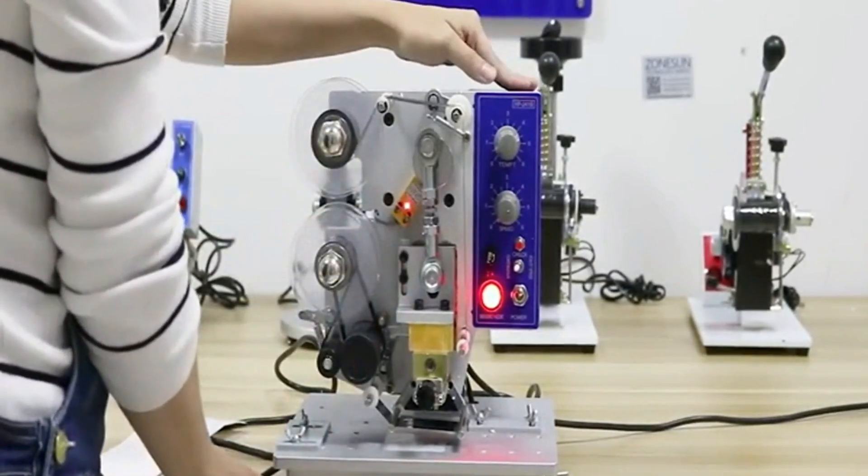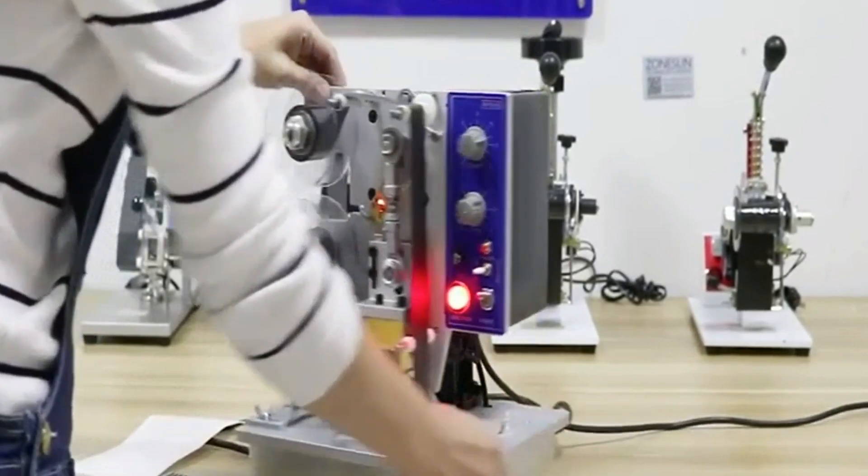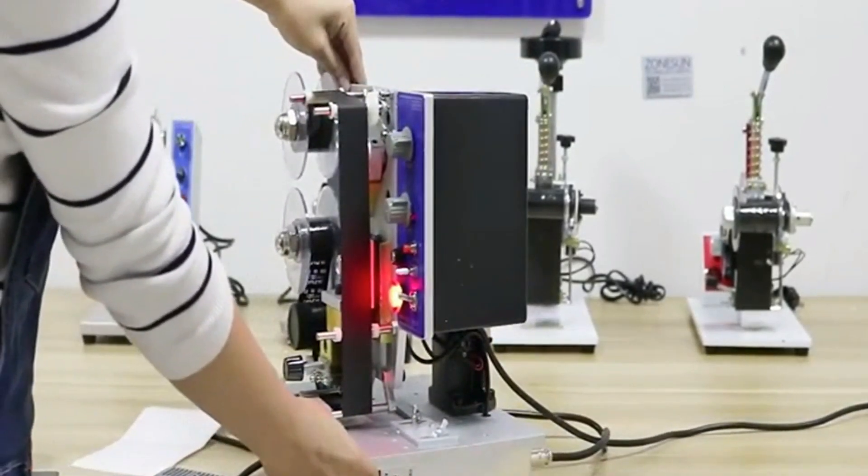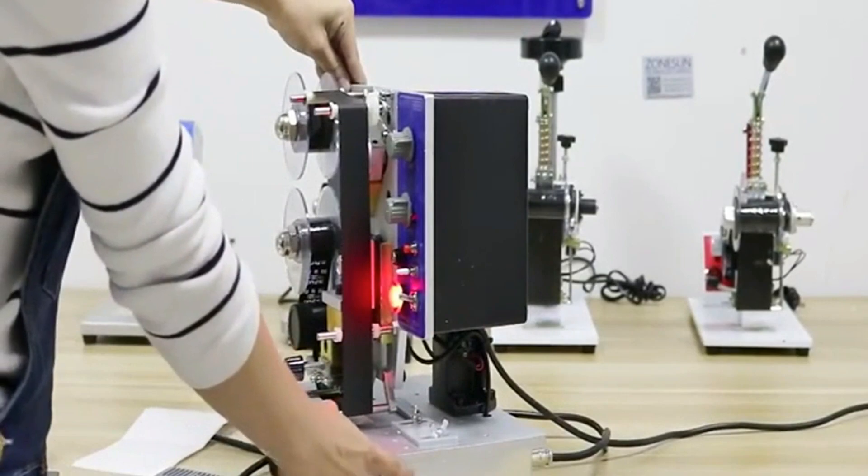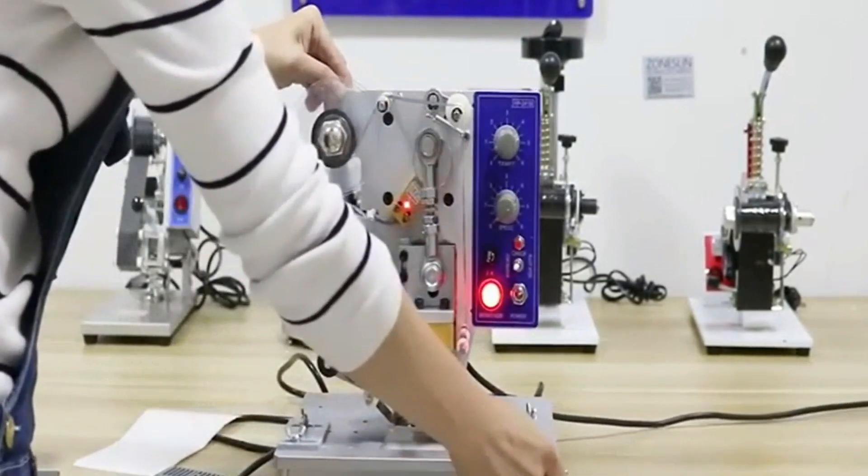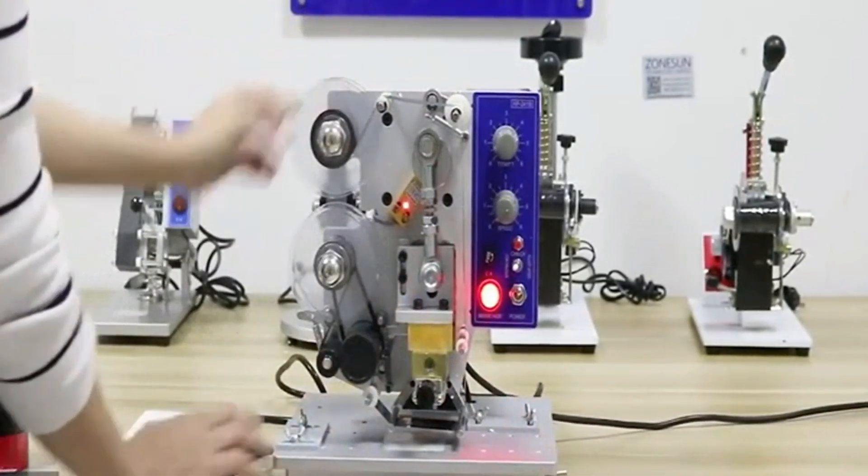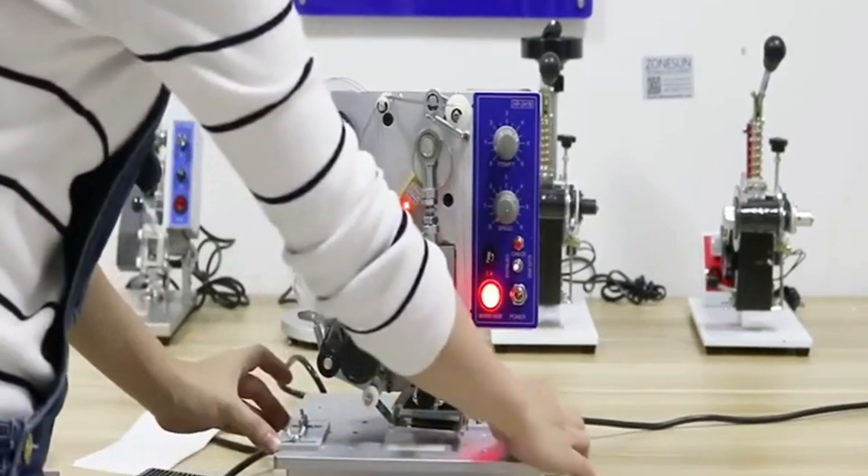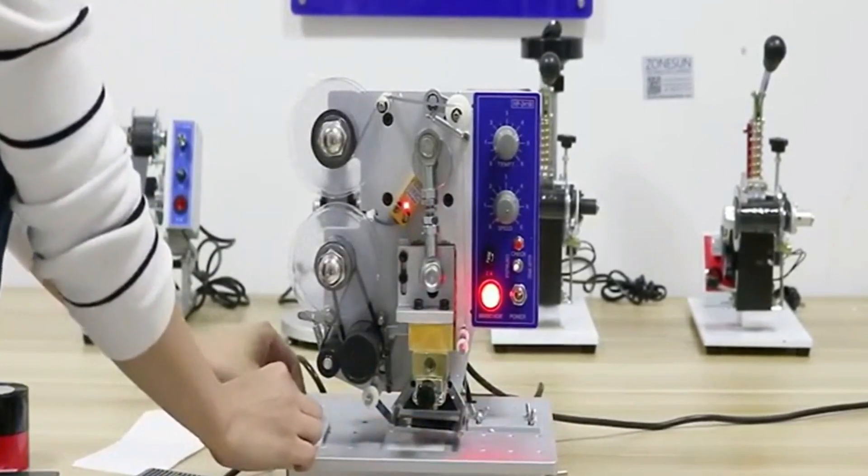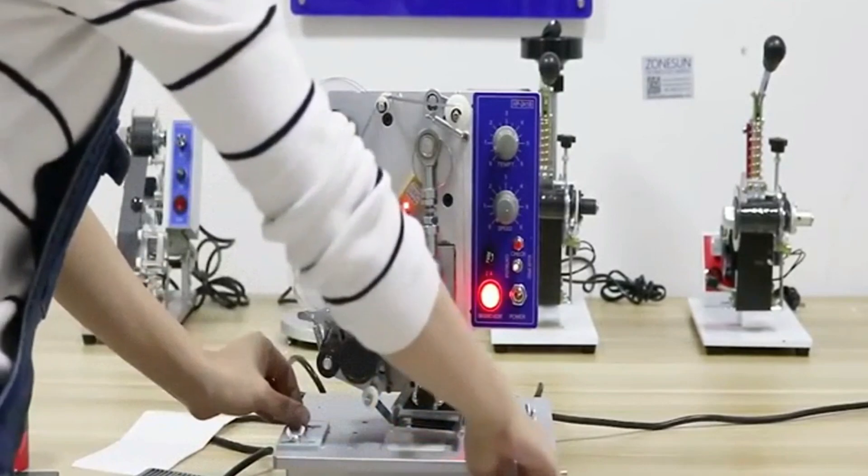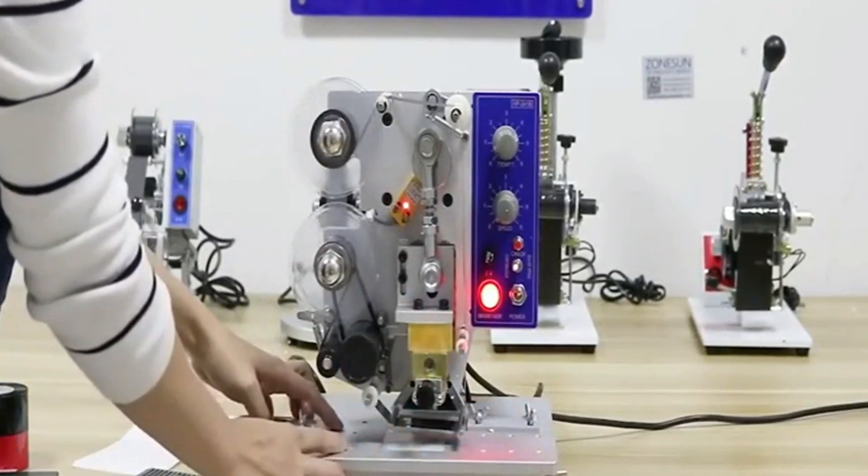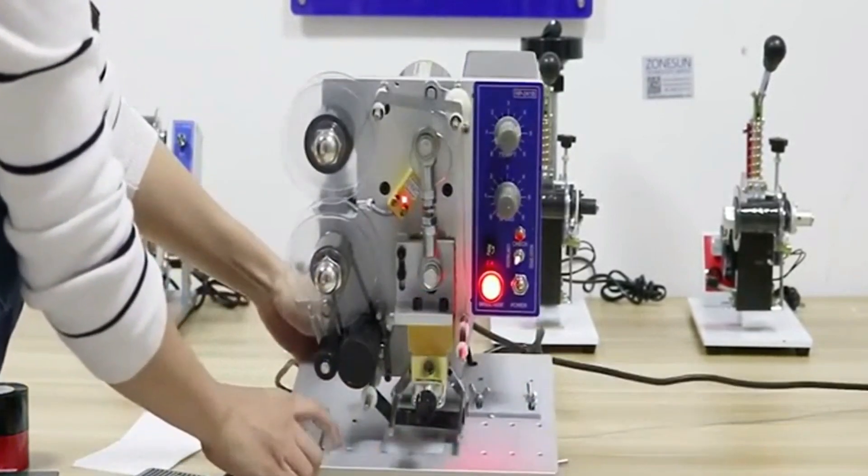It has two working modes. One is automatic dating and the other is controlled by the foot pedals. This shoe is to help you fix the position when you are stamping. You can move it with several holes here.